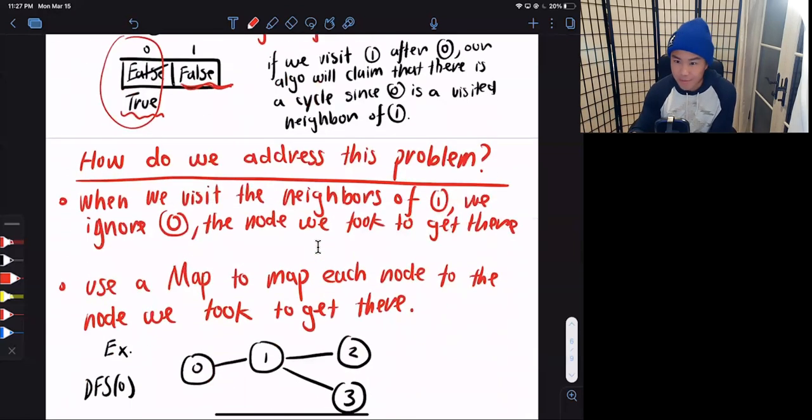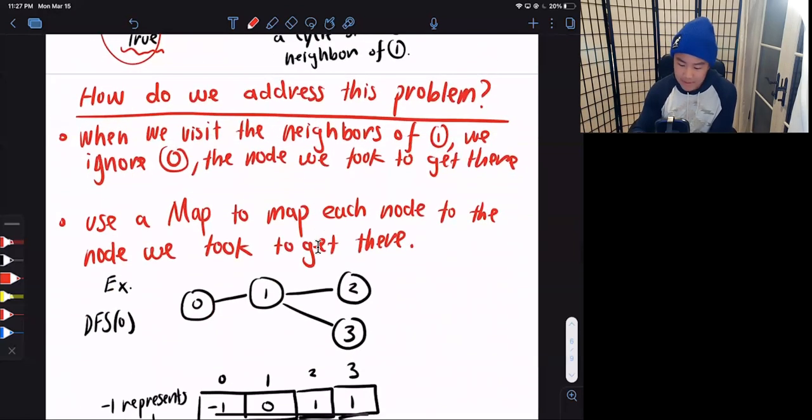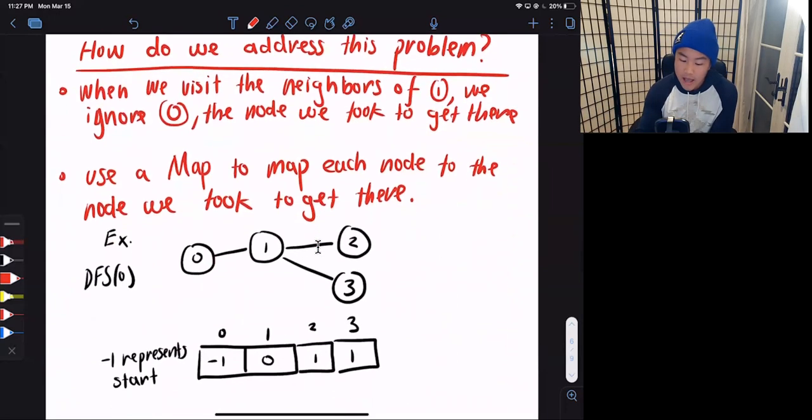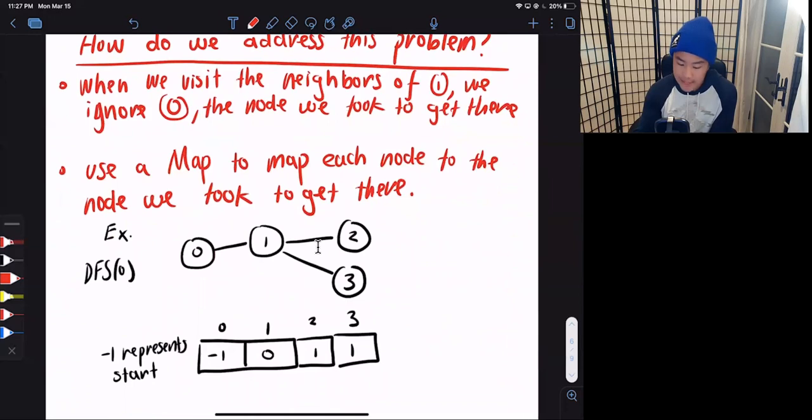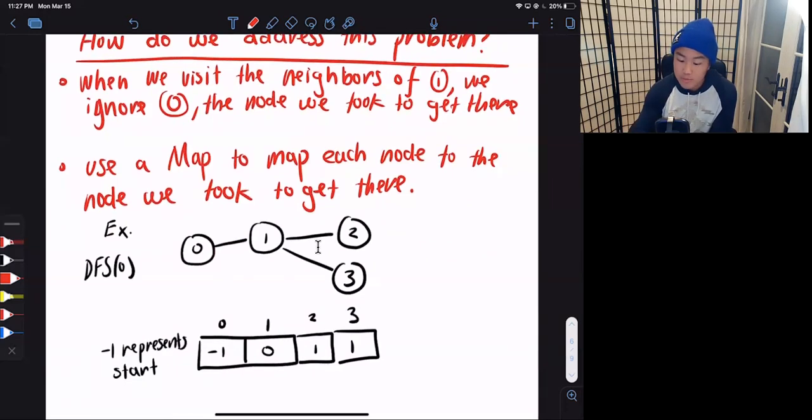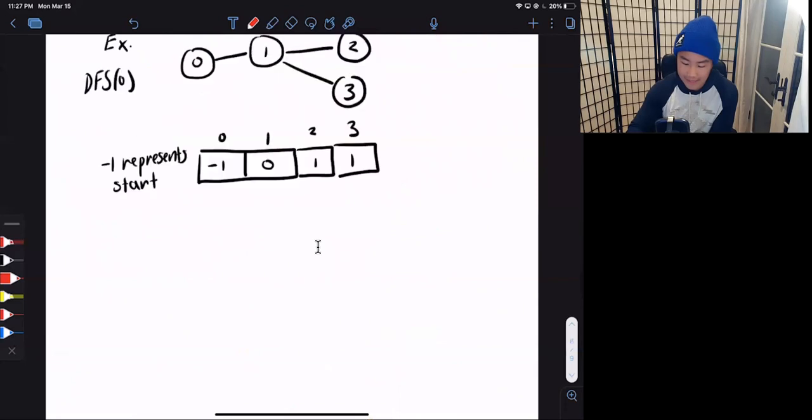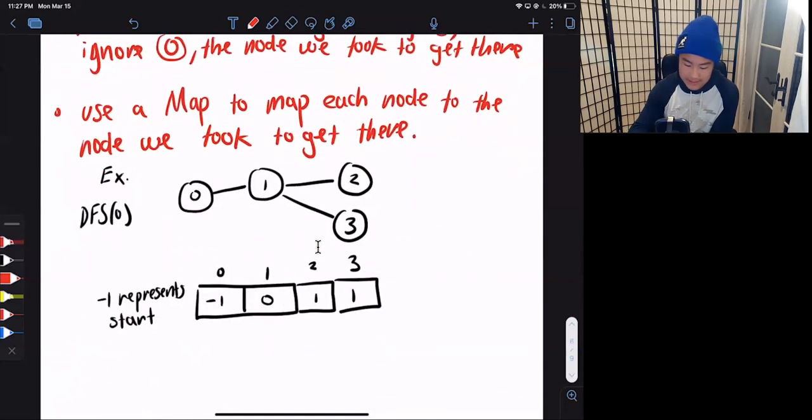So how do we address this problem? When we visit the neighbors of 1, we ignore 0, the node we took in order to get to 1. How do we represent this with the data structure? We want to use a map to map each node to the node we took to get there. So here's an example.